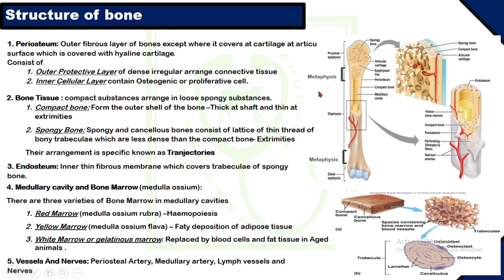Regarding the structure of bones, we should first know the parts and divisions of bone. Bone is divided into three parts: number one, diaphysis, also called the body of the bone; two, epiphysis, also called extremities — one proximal extremity and one distal extremity; and three, metaphysis, which is the area between the diaphysis and epiphysis. The metaphysis is where the epiphyseal growth plate is found, where ossification takes place until maturity to increase the length of the bone.